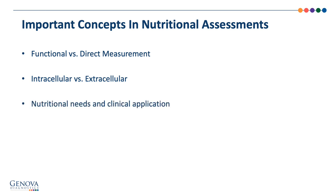Another important facet of a functional nutrition test is that many biomarkers provide insight into the nutritional needs of your patient and may also have direct clinical application, such as being an indication of a specific disease or disease process. For example, the organic acid quinolinic acid can indicate a potential need for vitamin B6, and has also been shown to be associated with inflammation and neurotoxicity. The more you learn about functional nutrition testing, the more you understand the relationships between nutrition and chronic disease at a cellular level.